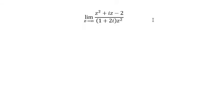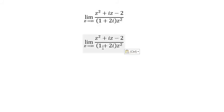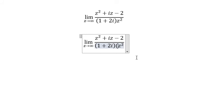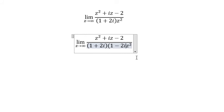I will show the technique of how to answer the question. In this one, we multiply by 1 minus 2i in both the denominator and numerator.